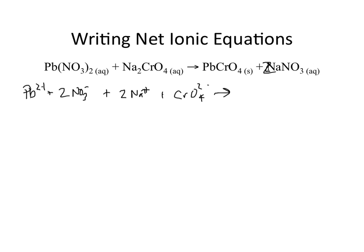Notice that our lead chromate on this side is actually a solid. It doesn't actually, therefore, get broken up into ions. So it stays as PbCrO4. And last but not least, you have two sodium ions and two nitrate ions.